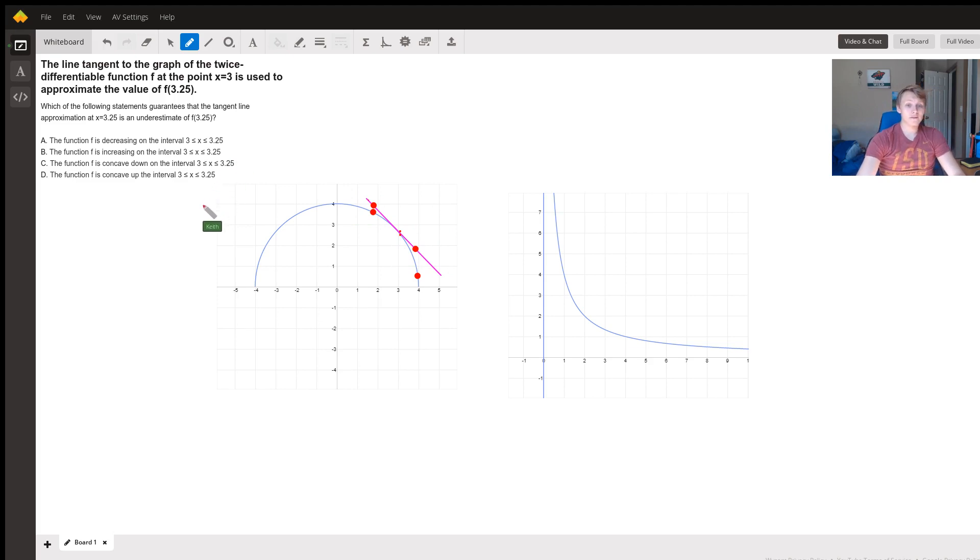And so here, to have an underestimate, well, what we have here is an overestimate. So concave down functions can't cause this underestimate, they can't be a necessity for an underestimate, so we'll get rid of the concave down option. And also, we have that the graph is decreasing on this interval, so that must not be a necessity for an underestimate.